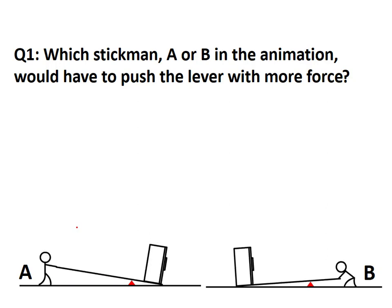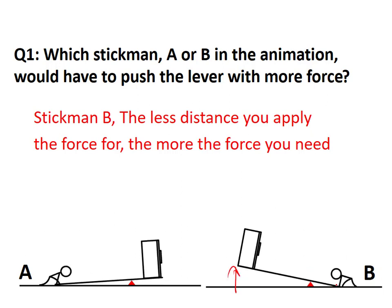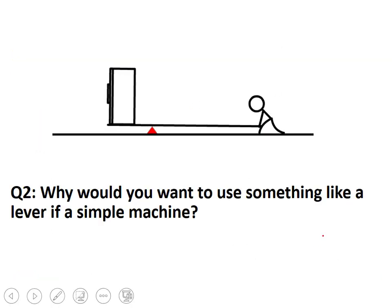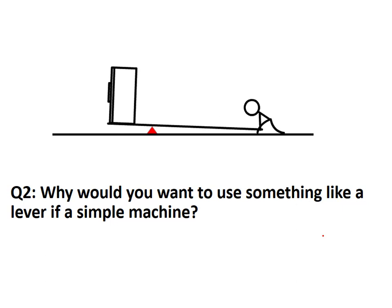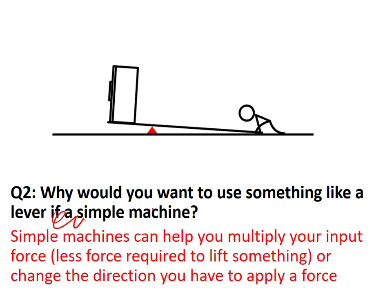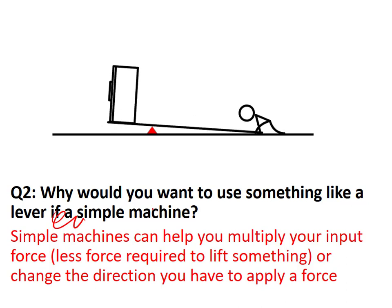Which statement — A or B in the animation — would have to push the lever with more force? That's going to be B, because he's getting a whole lot more distance out of it. He's trying to multiply his distance, not his force. Simple machines help you multiply your input force, requiring less force to lift something, and you can also change the direction you apply that force.